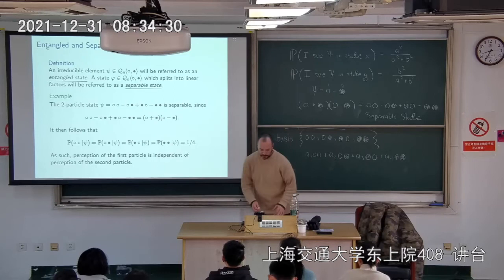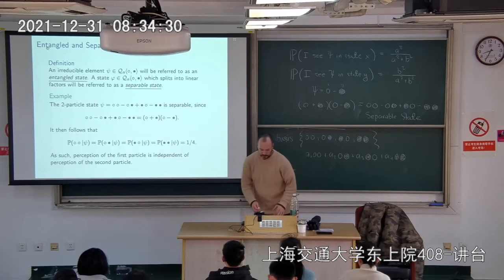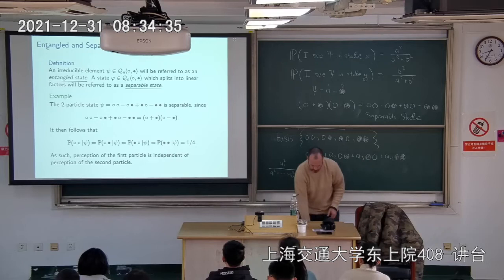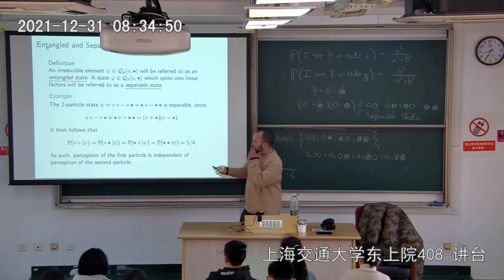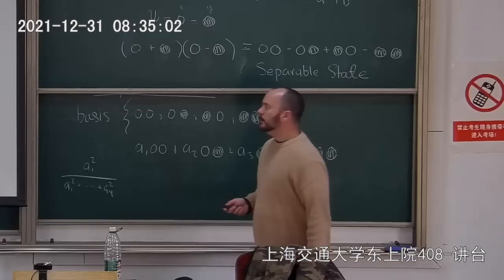With the separable state, each of white-white, white-black, black-white, and black-black has a probability of one-fourth. You might say: if I just replace the minus signs with plus signs, wouldn't I get the same probabilities? Yes, but you wouldn't get the factorization. And the fact that this state factors makes a huge difference.